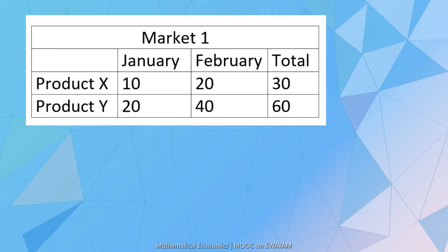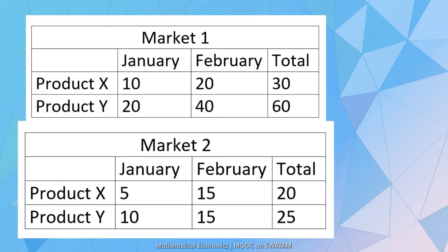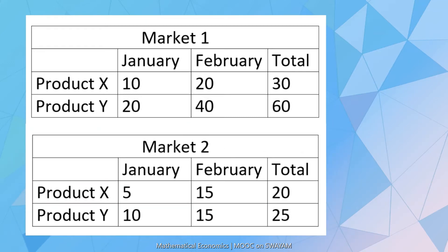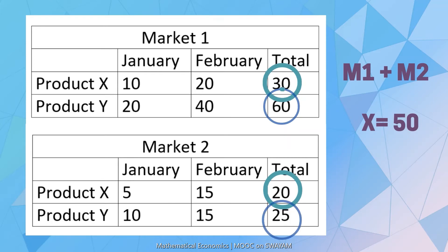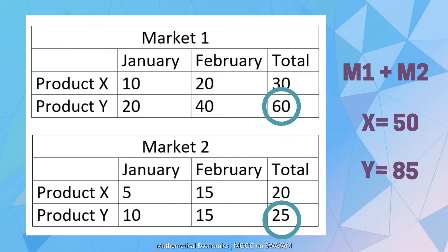Let us first organize the information in a table. We may construct two tables for M1 and M2. The total units of product X sold in M1 and M2 is equal to 30 plus 20, that is 50. And the total units of product Y sold in M1 and M2 is equal to 60 plus 25, that is 85.